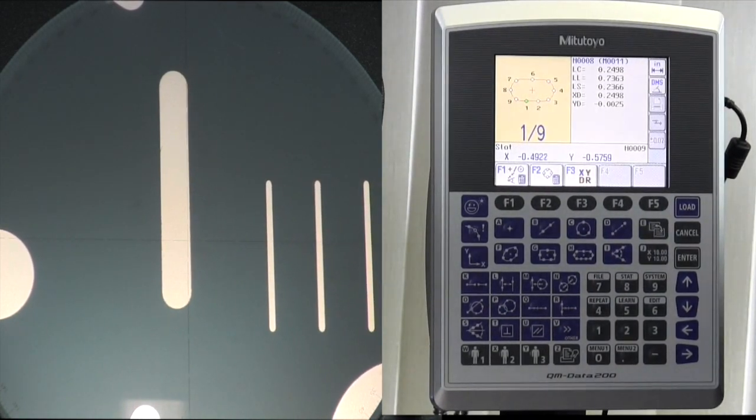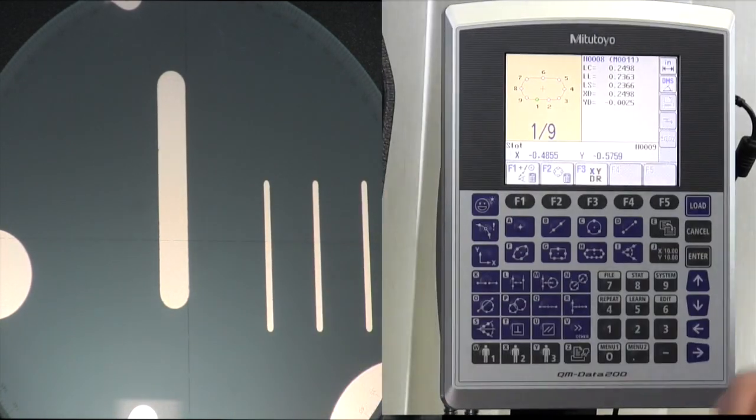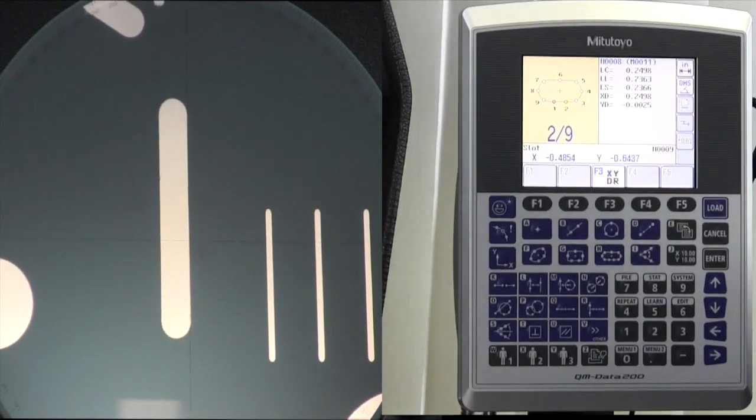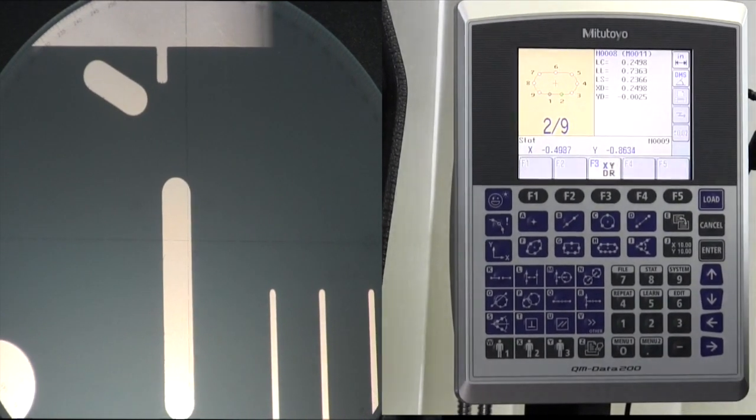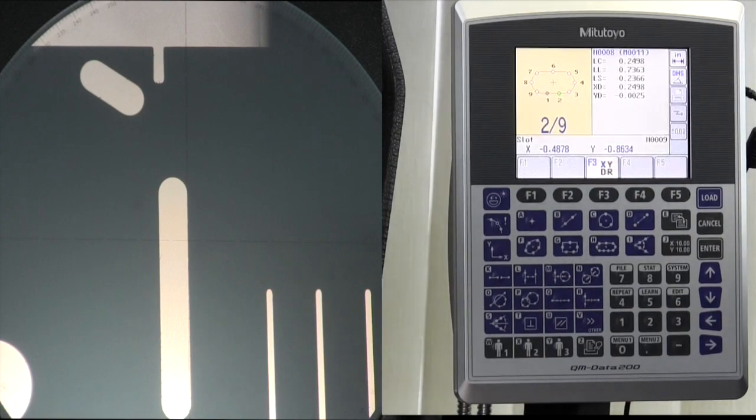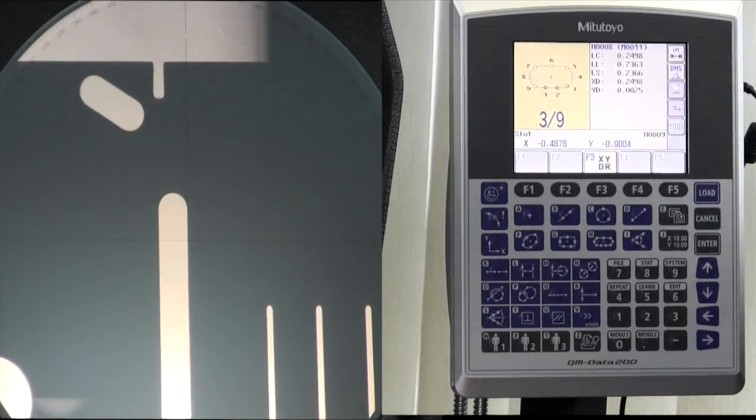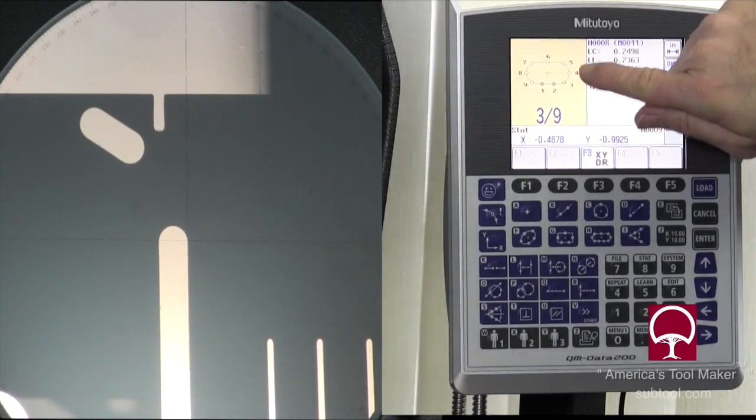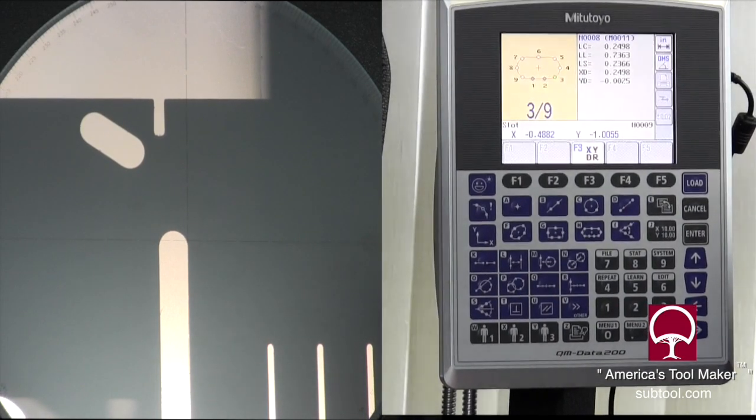So it tells us we need two points on a straight edge. So we picked two points here. There's point A. That one.